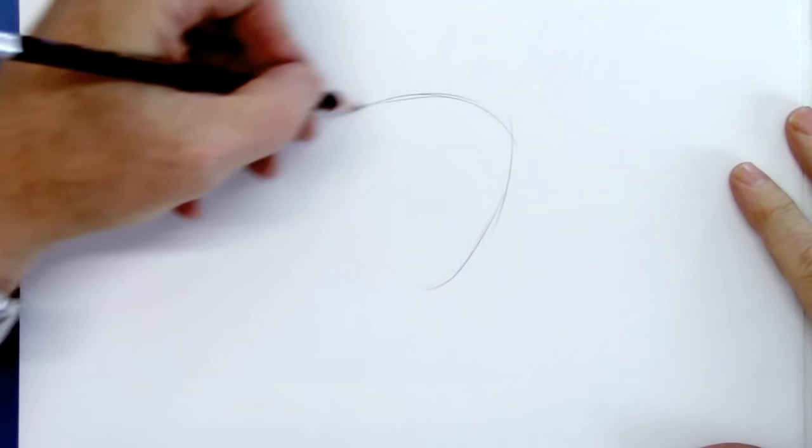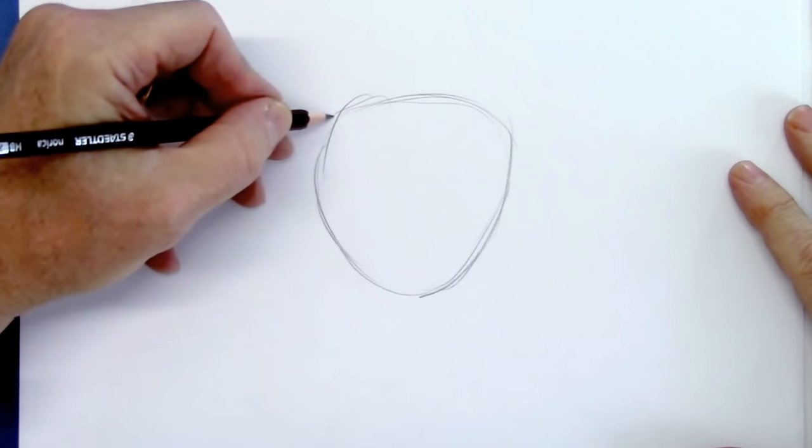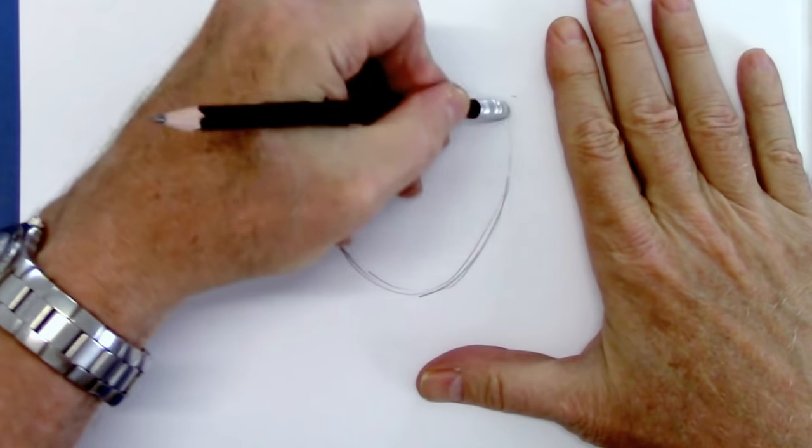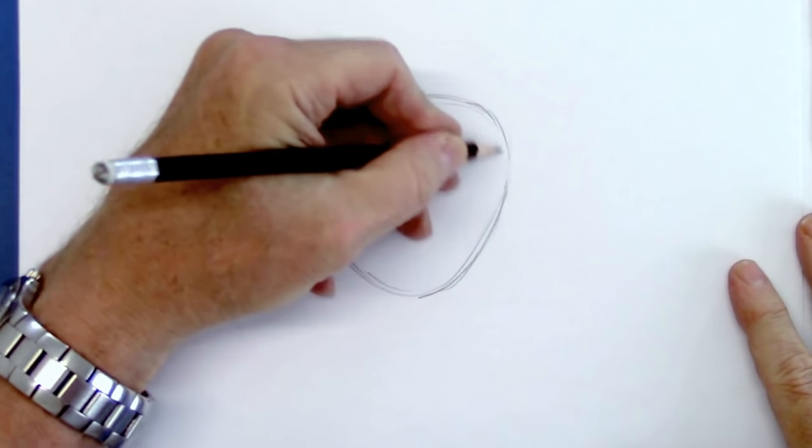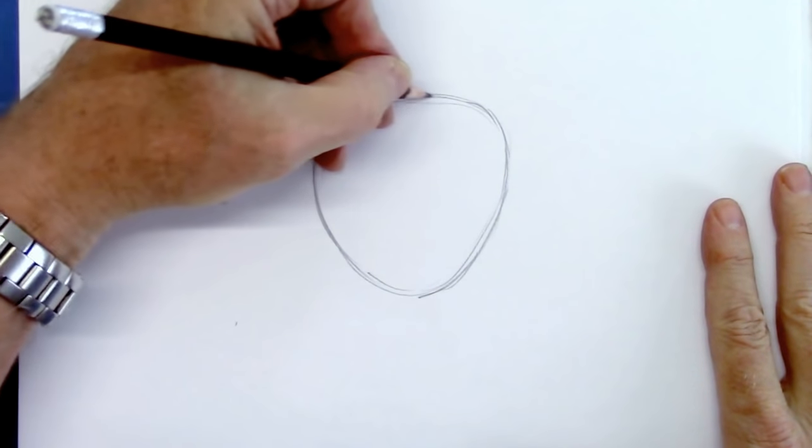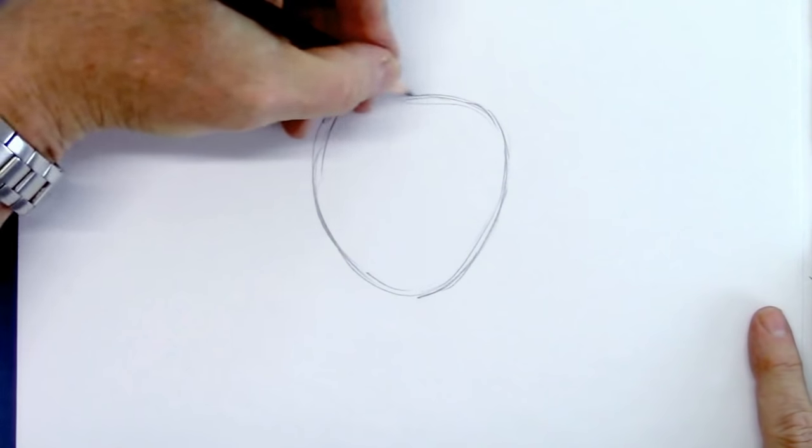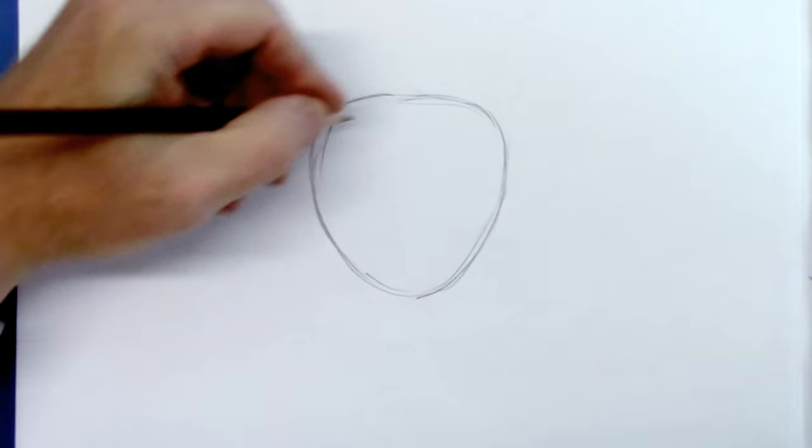We're gonna start with a simple shape. It's not really an egg shape, but it's close. It's like an egg shape that went on a real diet down here. Okay, so that's the basic shape. This is not as complicated as it's gonna get, and we'll fill it in as we go along.